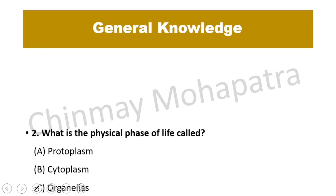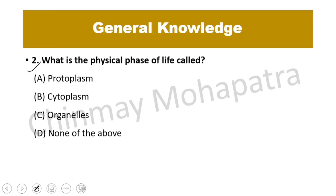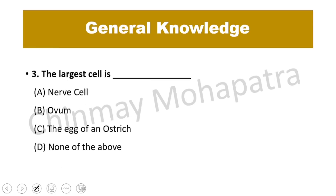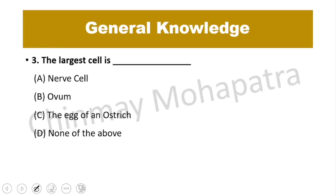Question number 2: What is the physical basis of life called? The physical basis of life is called protoplasm. Protoplasm is called the physical basis of life. Also note: the largest cell is the egg of an ostrich.